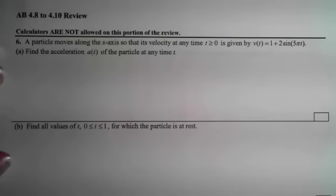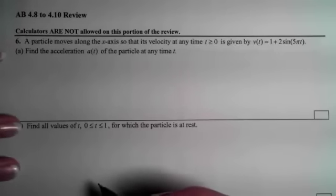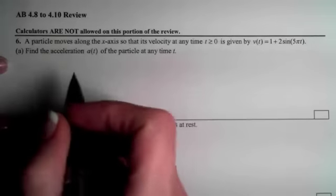Part A says that we know the velocity at a given time when time is greater than zero and we want to find the acceleration. In order to get the acceleration when we know the velocity, we need to take a derivative.